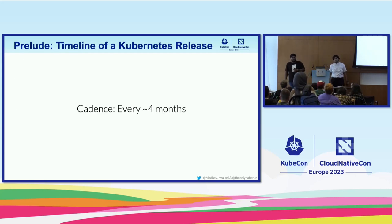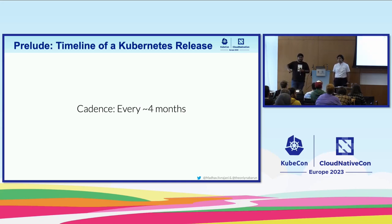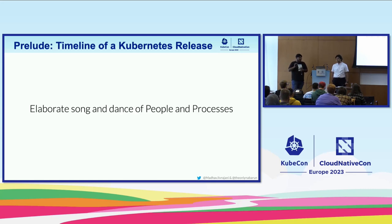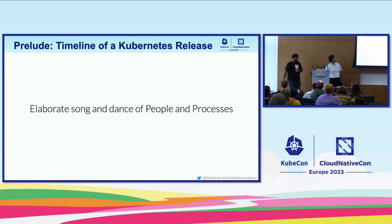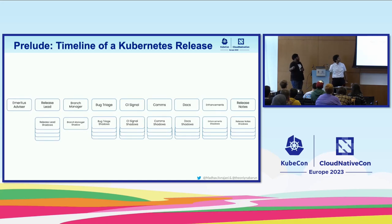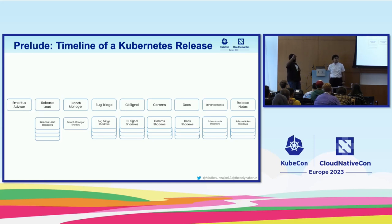How and when is Kubernetes released? We release Kubernetes every four months — approximately three releases a year. It's a very elaborate song and dance of people and processes. We have a really big yet small team; we are always short of hands, but we do have verticals in the release team who handle specific areas of the release.